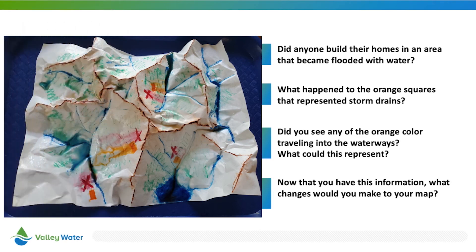Now that you have seen what happens when it rains on your watershed map, you can make some observations. You can see the path taken by the water as well as some of the things it picked up along the way. Take a moment to discuss the following questions as a class: What happened to the orange squares that represent storm drains? Did you see any of the orange color traveling into the waterways? What could this represent? And now that you have this information, what changes would you make to the placement of homes and storm drains on your map?